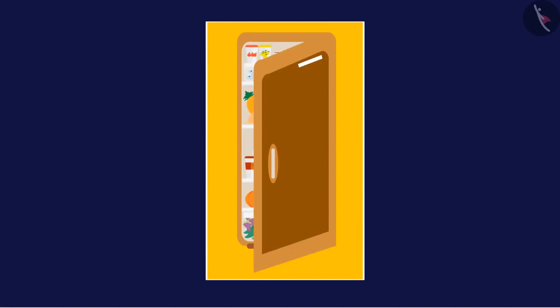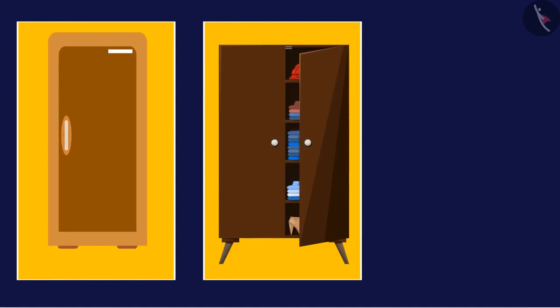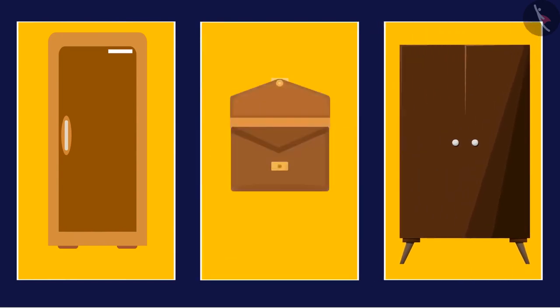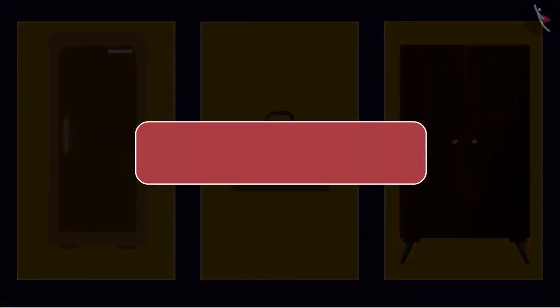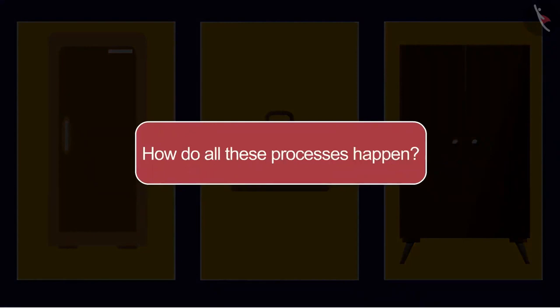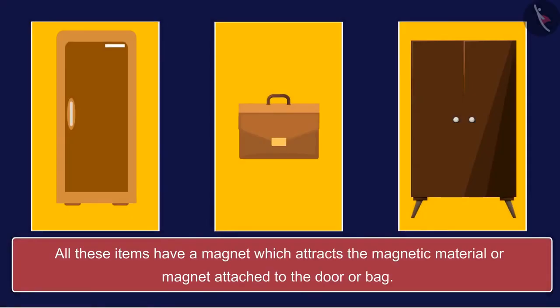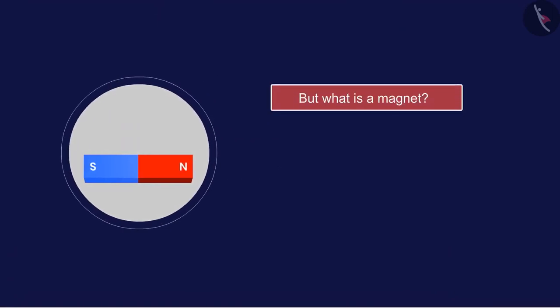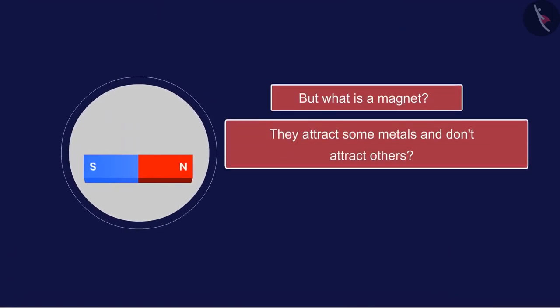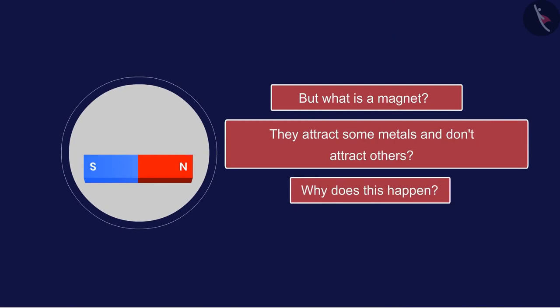Have you ever noticed the door of the refrigerator gets closed quickly when moved towards it? In the same way, the door of the cupboard also closes as soon as it reaches close to the cupboard, and the button-like lock sticks to the back surface quickly. How do all these processes happen? The answer is the application of magnets. In today's video we'll answer some questions related to magnets.